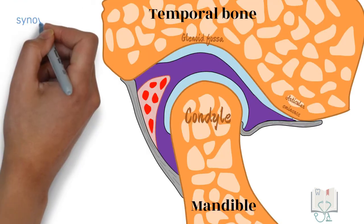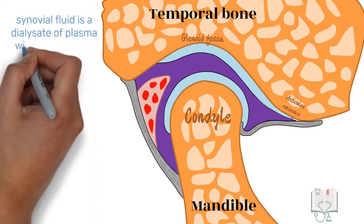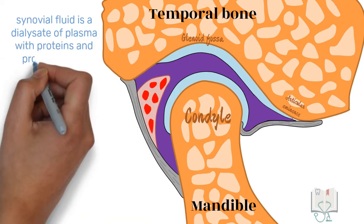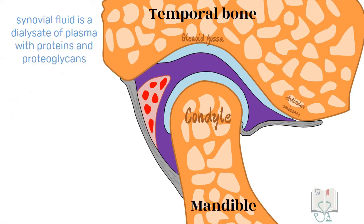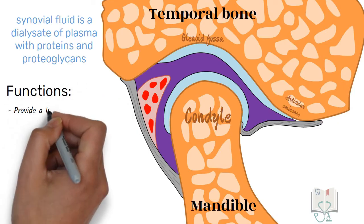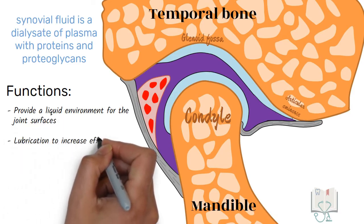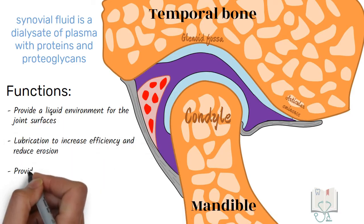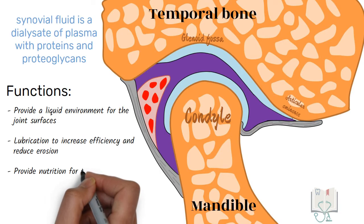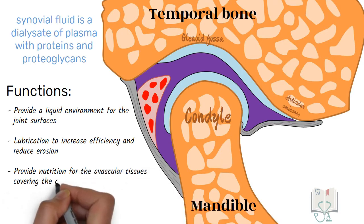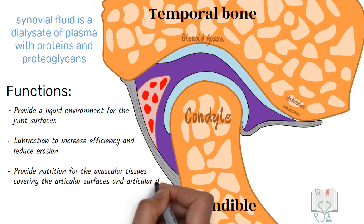Synovial fluid is a dialysate of plasma with proteins and proteoglycans, and fills the upper and lower compartments of the joint. Its functions include: providing a liquid environment for the joint surface, lubrication to increase efficiency and reduce erosion, and providing nutrition for the avascular tissues covering the articular surfaces and articular disc.